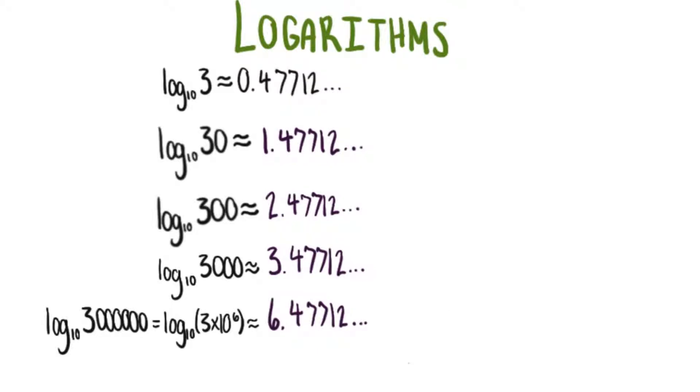So here is what all of our numbers are equal to. I hope your guesses were close. I think looking at this last log down here, log base 10 of 3 million, gives us a clue as to what's happening.